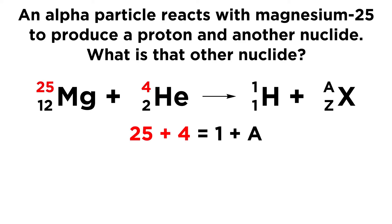So taking a look at mass number first, on the left we have 25 from magnesium and 4 from helium, so that means that must be equivalent to 1 plus A. Those sums must be equal. So if we do the arithmetic, we get 28 for A, so nuclide X has a mass number of 28.